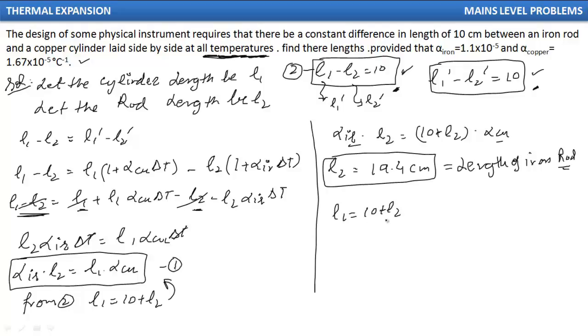If I have found L2, then definitely I have L1 as well. And that comes out to be 29.4 cm. So we have found L1 and L2 both.